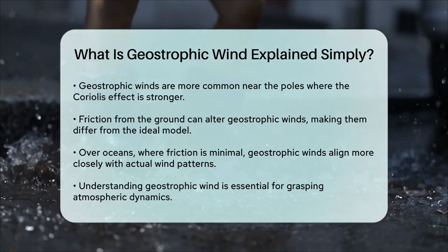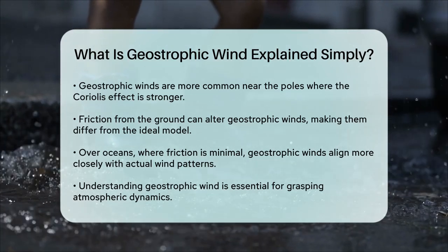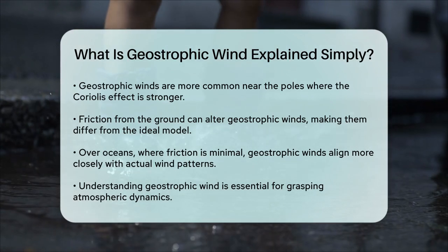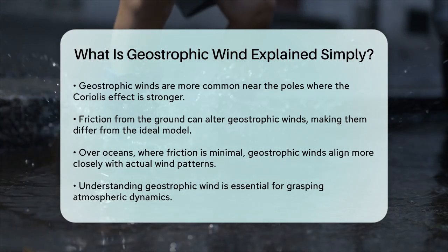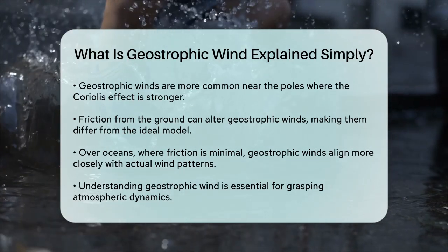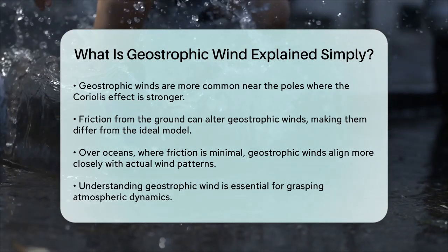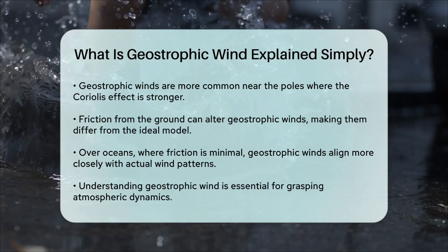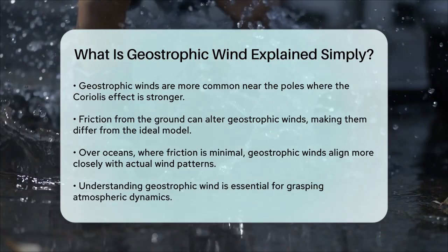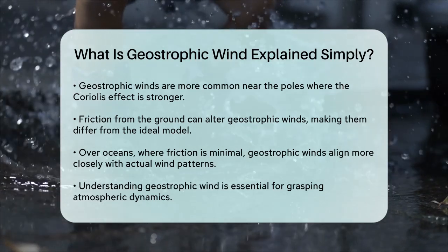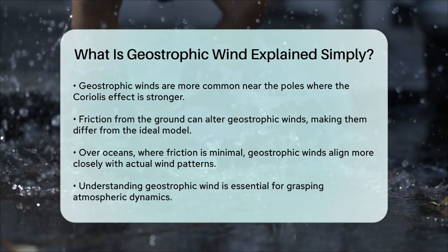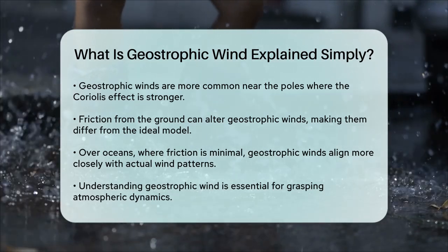To sum it up, geostrophic wind is the wind that results from the balance between the pressure gradient force and the Coriolis effect, blowing parallel to isobars high up in the atmosphere. This balance is what makes geostrophic winds a fundamental concept in understanding how our atmosphere works.